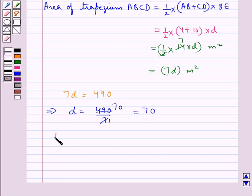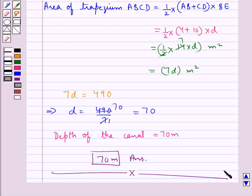That is, the depth of the canal is equal to 70 meters. This is our final answer. So this completes the session. Hope you have understood the solution for this question.